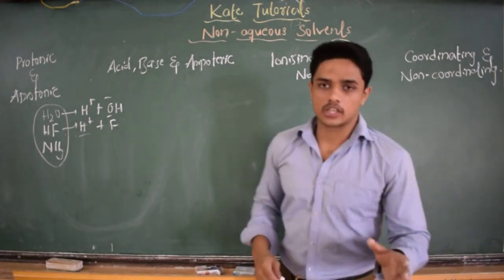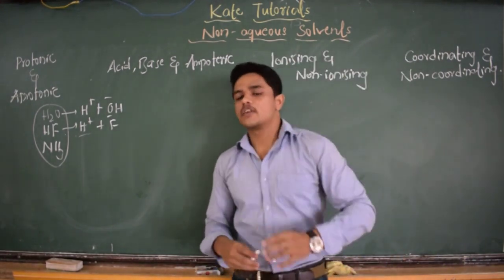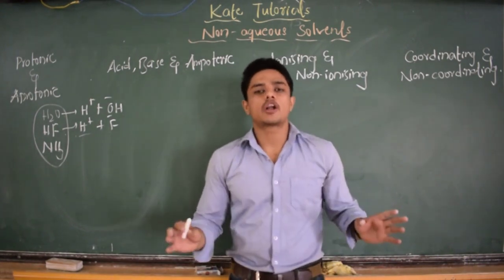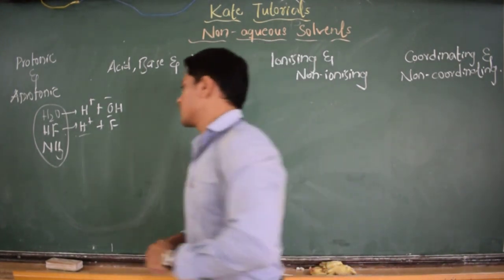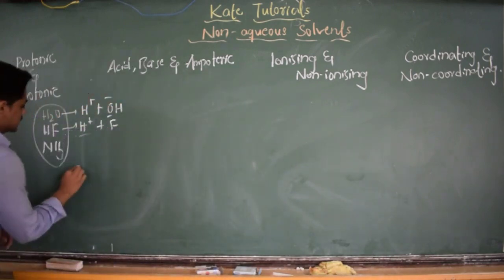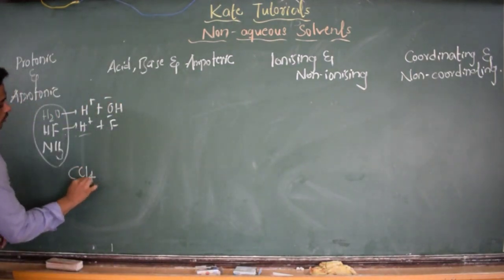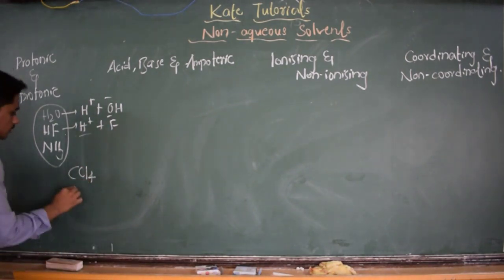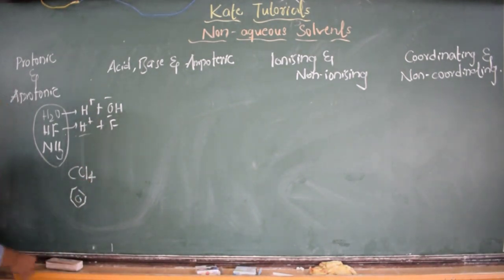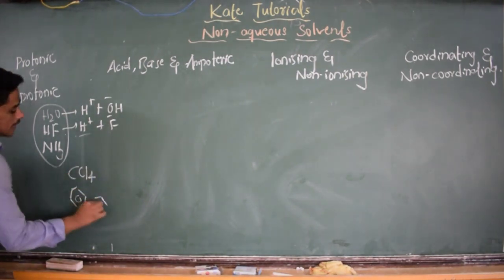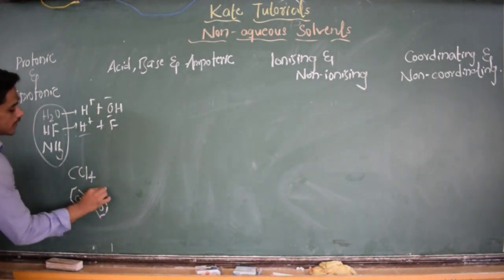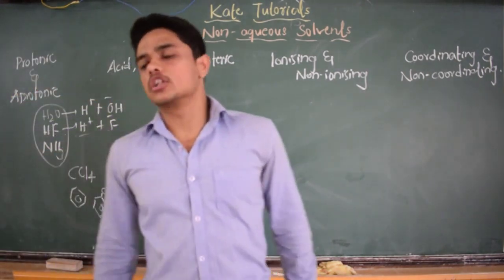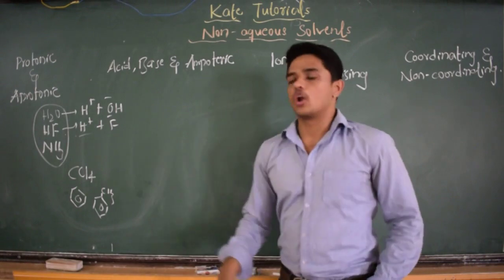The definition for aprotic solvents: these are solvents from which we cannot derive the H⁺ ion. For example, carbon tetrachloride CCl₄, benzene, and toluene — these are organic solvents from which we are not going to get any protons. So they come under aprotic solvents.